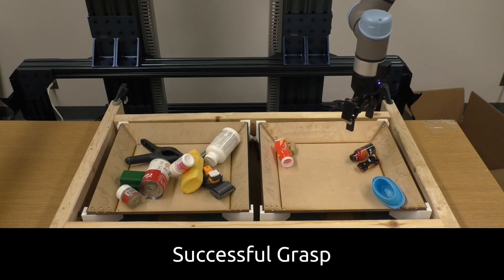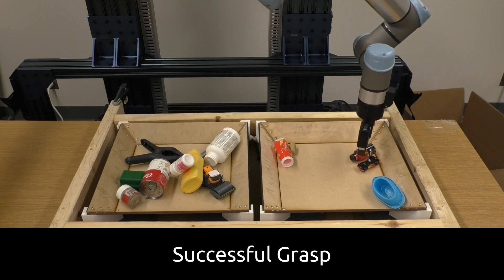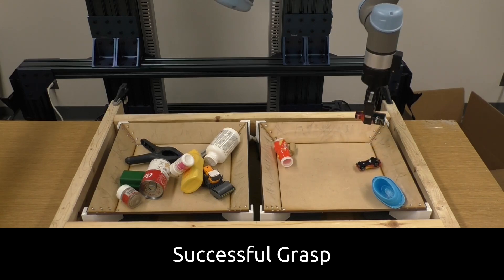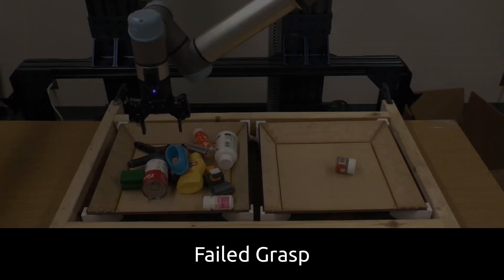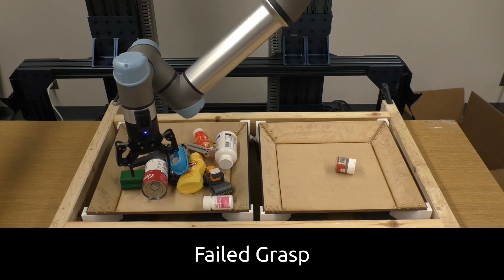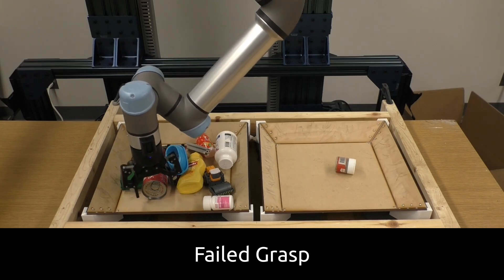The robot attempts a grasp at the location and orientation given by the networks. If the robot is holding something above the bin after the grasp attempt, the agent receives a positive reward. If the robot is not holding anything, the agent receives no reward.